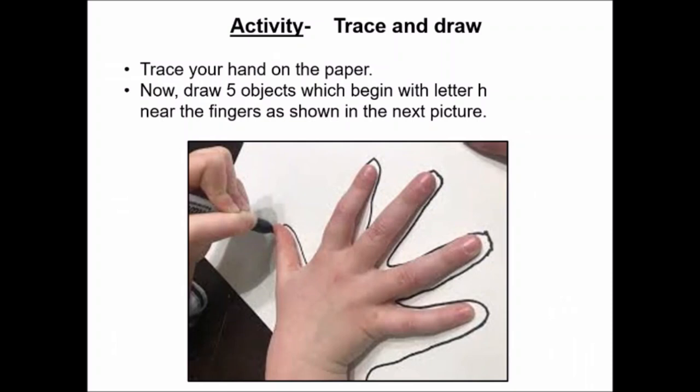Now it is time for an activity, trace and draw. Trace your hand on the paper children. If you can trace your hand yourself then do it, but if you cannot then ask your mama or papa to help you in tracing your hand. Now after tracing the hand you have to draw five objects which begin with letter H near the fingers as shown in the next picture.